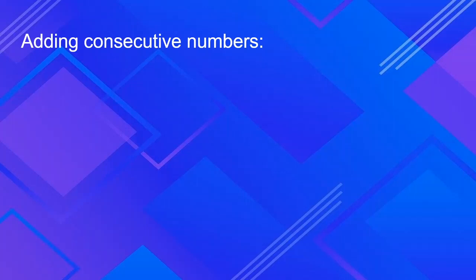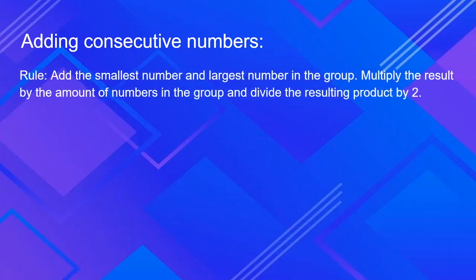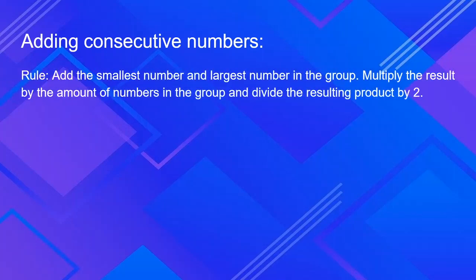I'll tell you a rule and then show you a few examples. The rule is: add the smallest number and largest number in the group, multiply the result by the amount of numbers in the group, and divide the resulting product by 2.